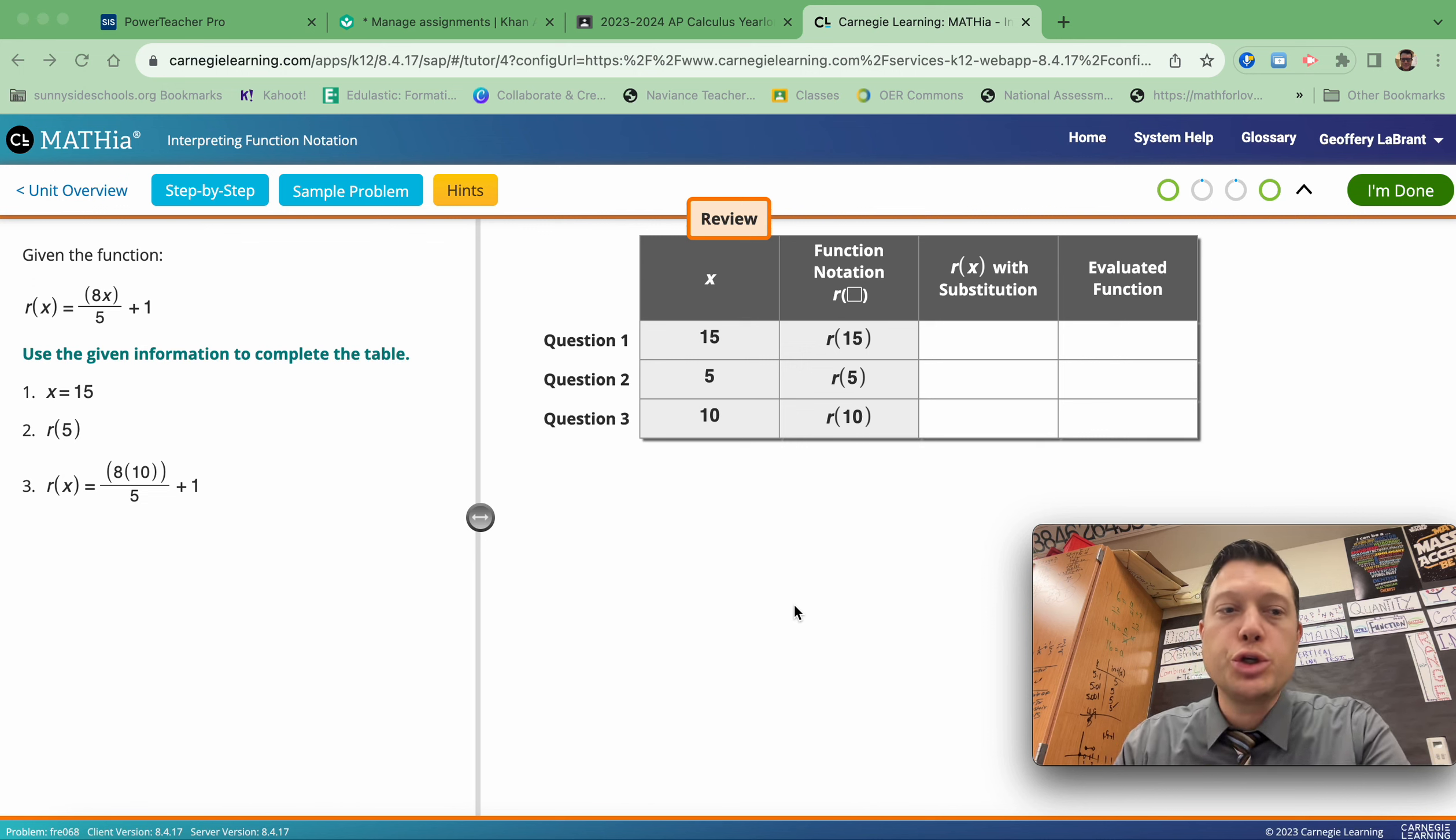Guys, this is function notation and we're interpreting functions. I've already filled in the first two columns because I'm using the information where X is 15. So that's where there's a 15 there.